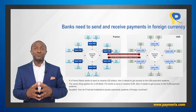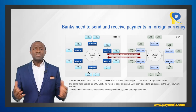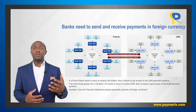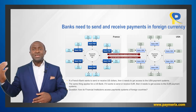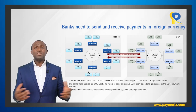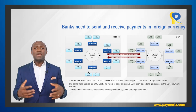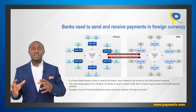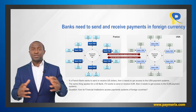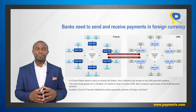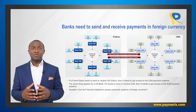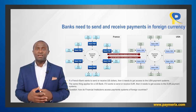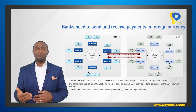Let us consider the payment systems of two countries: France and the United States. French banks have customers who want to transfer funds to the United States — for example, parents may need to pay the tuition of their child studying at a university in the States. And in the United States, there are people who want to transfer funds in Europe, such as a French company supplying a product to a US company and wanting payment made in Europe. Banks need to send and receive payments in foreign currency to serve their customers, but they can also do it on their own behalf. If a French bank wants to send or receive US dollars, it needs to get access to the USA payment systems. And the same applies for a US bank wanting to send or receive euro.